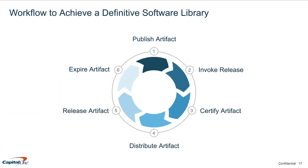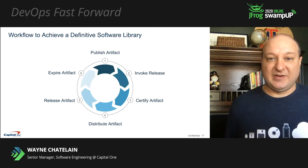So what does this lifecycle look like represented visually? Here you can see that we're going to invoke a build to publish our artifacts to Artifactory. Then we're going to invoke a release, but before we release, we want to send those artifacts through our certification phase. Once approved, we can distribute those artifacts to the edge environments and then execute the release using the approved artifacts from Edge. Finally, we'll want to expire those artifacts and restart the cycle again to ensure that our library is kept up to date.